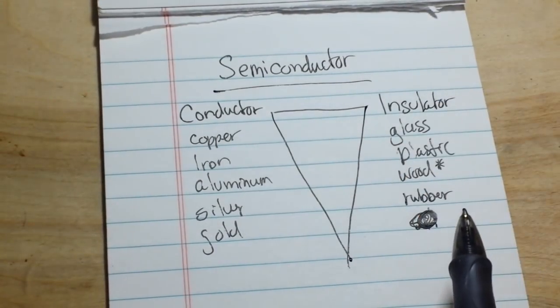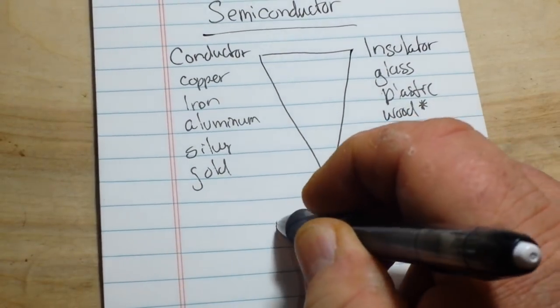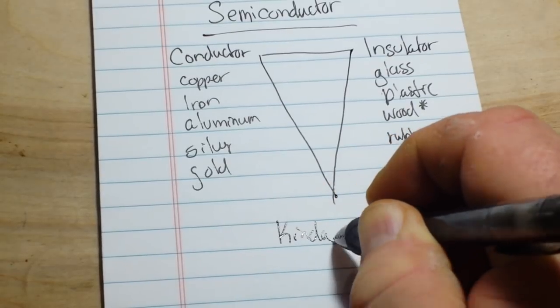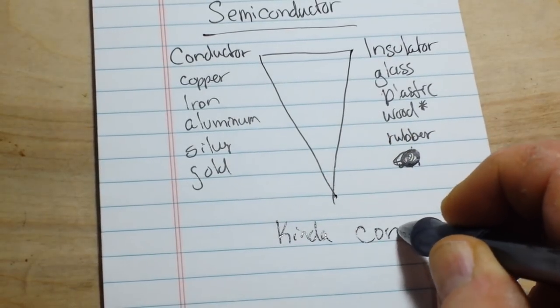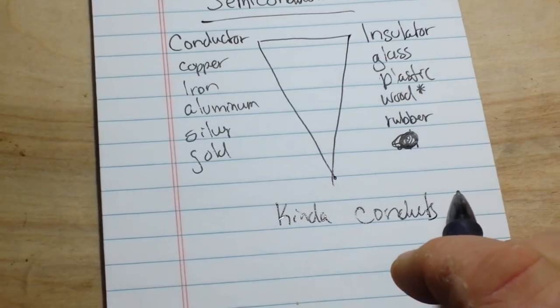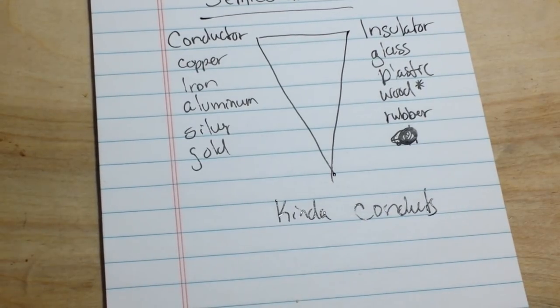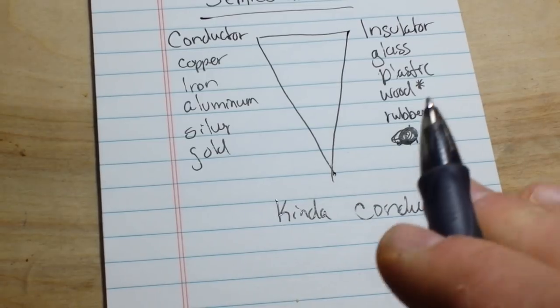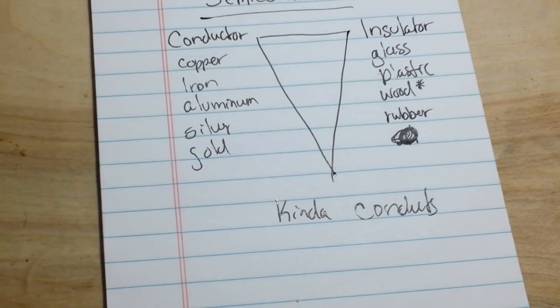So what does a semiconductor do? Well, it kind of conducts. A semiconductor is like trying to get your child to do something it doesn't want to do. If you push it hard enough, it'll do it. But on its own, it won't. So try and keep that in mind as we talk about it. Alright, let's go into this a little further.